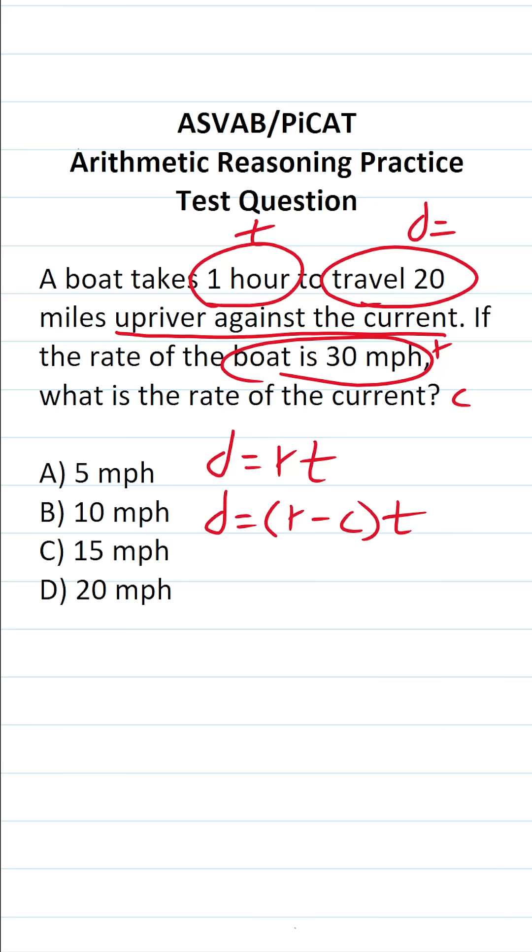Just like that, we rewrote the formula, and now we can solve this one. We know distance is 20. We know the rate of the boat is 30 miles per hour. We're going to be solving for C, and we know it took the boat a time of one hour to make this trip.